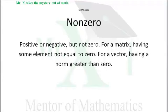A zero matrix has all of its elements equal to zero. So if a matrix has just at least one element that's not equal to zero, then we have a non-zero matrix.